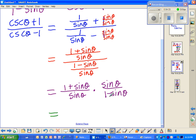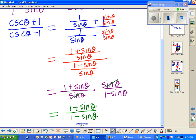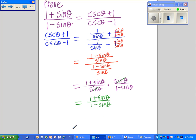We have a complex fraction so we take the reciprocal and multiply times the numerator. So this ends up canceling and I get one plus sine of theta over one minus sine of theta.